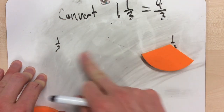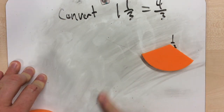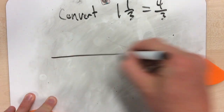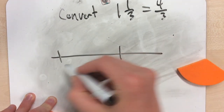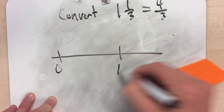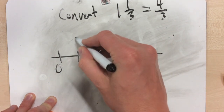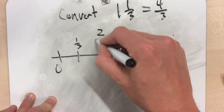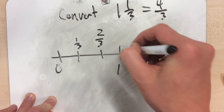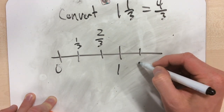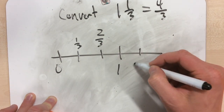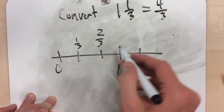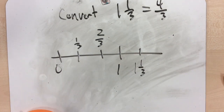If I make a number line with fractions, I can show you this. There's 0, there's 1. I've got 1 third, 2 thirds, this will be 3 thirds, and this is 1 and 1 third. I have 1, 2, 3, 4 thirds.